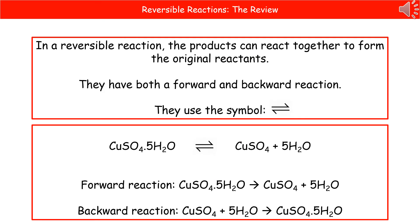In today's chemistry check, we're looking at reversible reactions and equilibria. In a reversible reaction, the products can react together to form the original reactants, so they've got both a forward and backward reaction. Make sure you know the symbol for it, which is half an arrow in one direction and half an arrow in the other direction. An example of a reversible reaction: the forward reaction is hydrated copper sulfate making copper sulfate and water, and the backwards reaction is copper sulfate and water making hydrated copper sulfate.